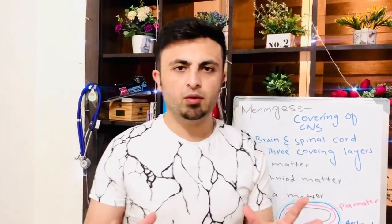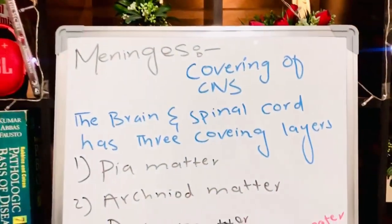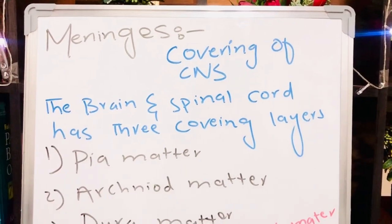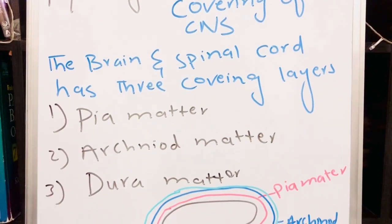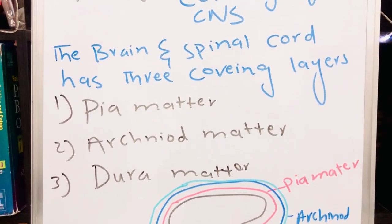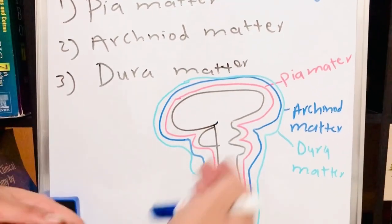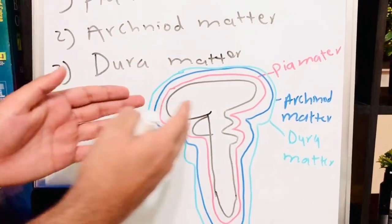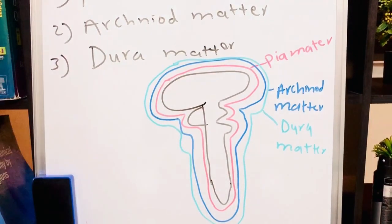Meninges are the outermost covering of the central nervous system. They protect our brain and spinal cord. Meninges are made up of collagen and fibrils. It has three covering layers: the first is pia mater, the second is arachnoid mater, and the third is dura mater. As we can see in the diagram, the innermost layer is pia mater, outer to it is arachnoid mater, and the outermost and toughest is the dura mater.